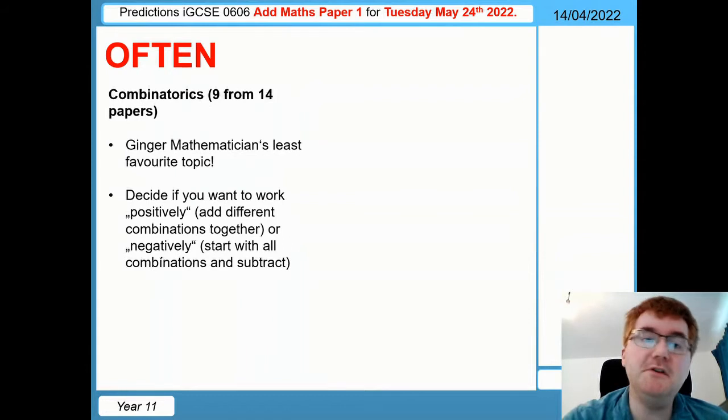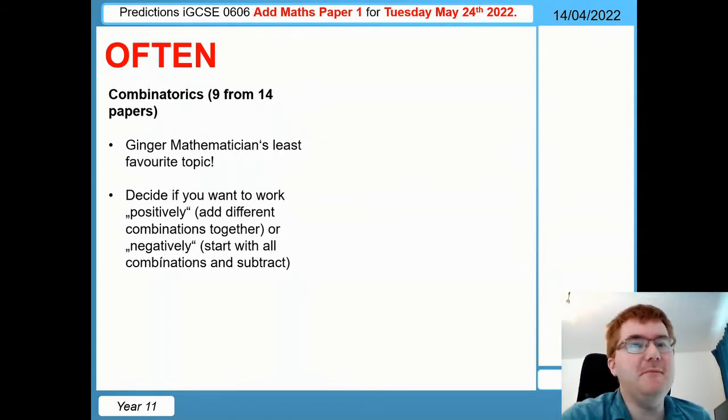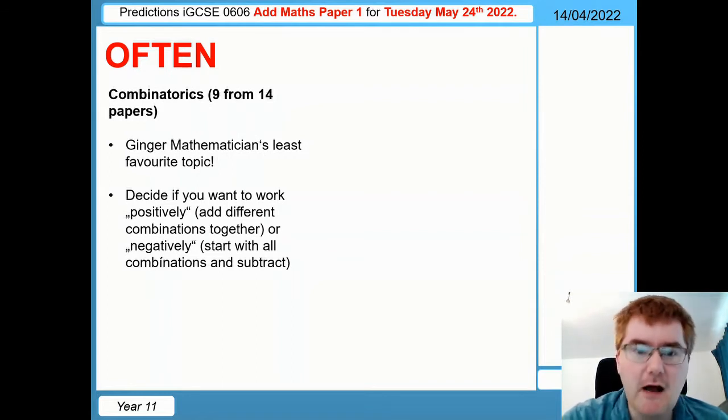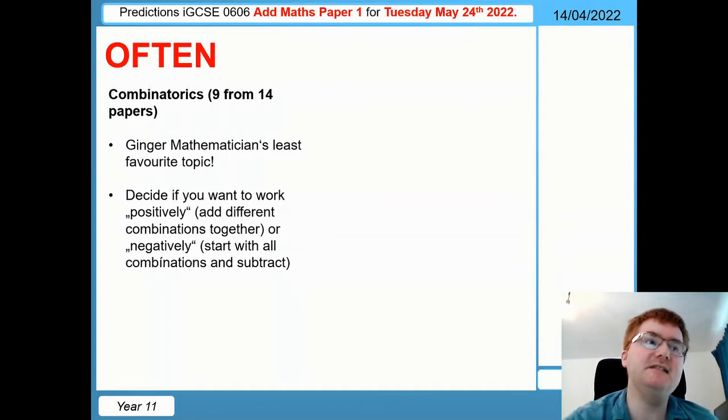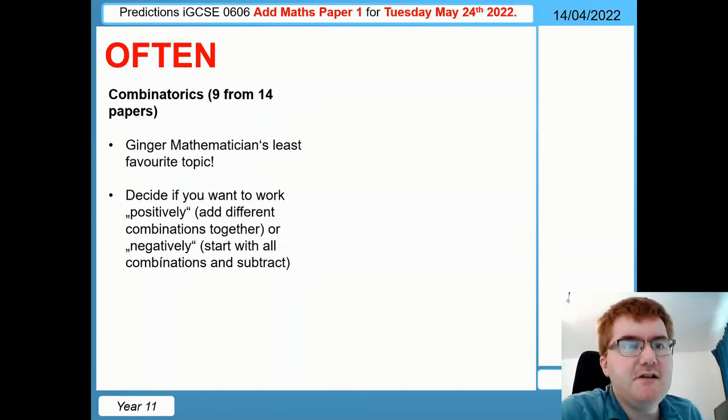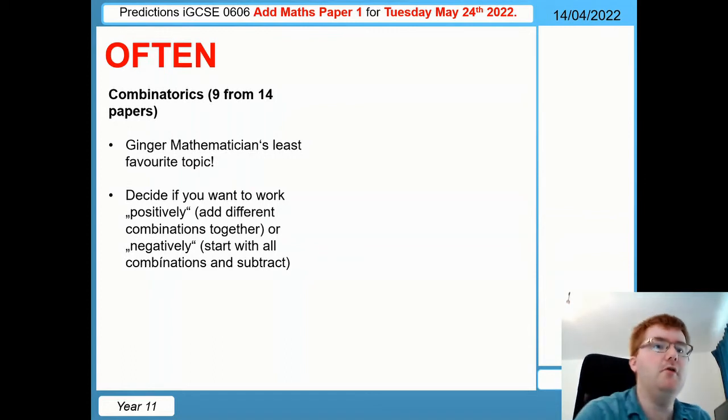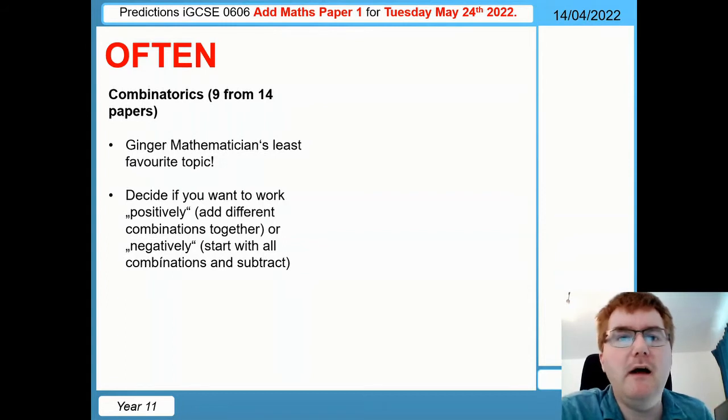On to combinatorics. Now if you talk to any of my students, they know I really don't like this topic - I find it always hard to get my head around it. One thing I will give you in terms of advice is when you are looking at these problems and working out how many combinations or permutations there are, try and decide if you want to work so-called positively, so you're adding the different combinations or permutations together, or start with all the different combinations and then work backwards and take away situations. That will help you find the most easiest route towards the answer on this topic.